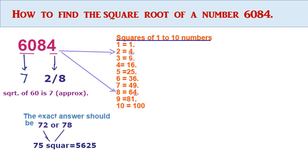Then, take the first two digits, that is 60. The approximate square root of 60 is 7. Our exact answer should be 72 or 78. In deciding whether our answer is 72 or 78, take the middle number 75 and find the square, which is 5625. Here, 6084 is greater than 5625, so take the bigger unit digit, that is 8. Therefore, our answer is 78.